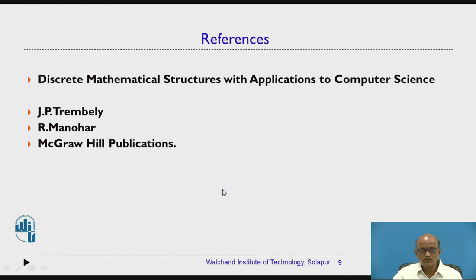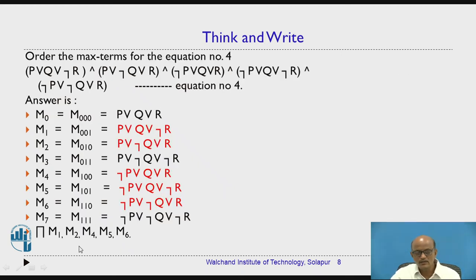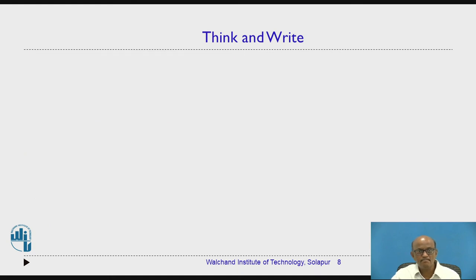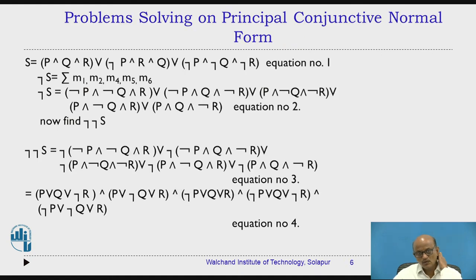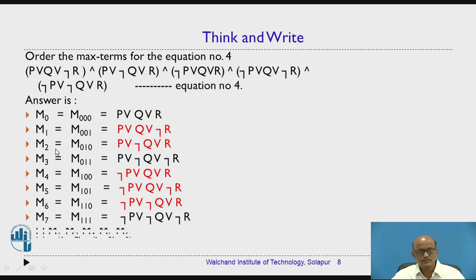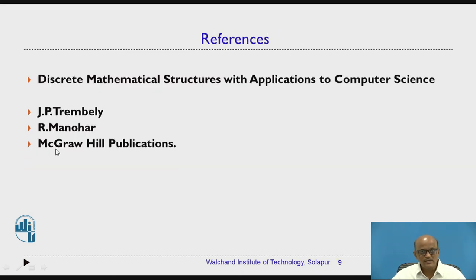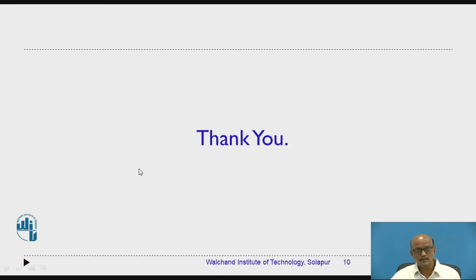Equation number 4 is the PCNF — the principal conjunctive normal form. These are the references, and I hope you have understood how to convert any given formula into a product of sums canonical form or principal conjunctive normal form. Thank you very much.